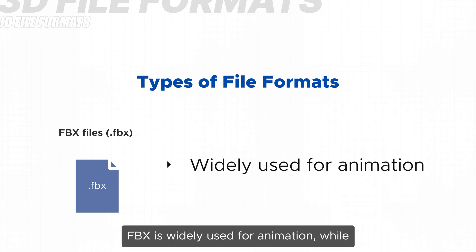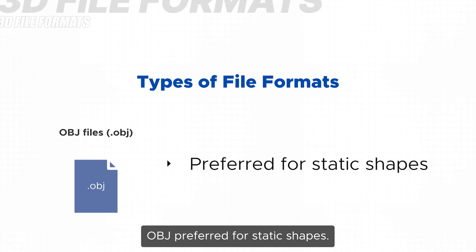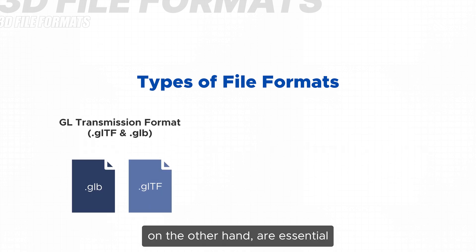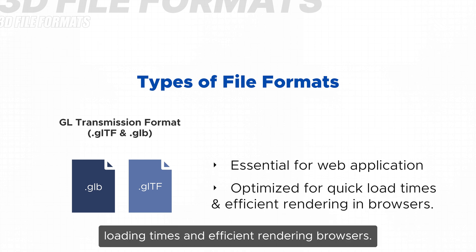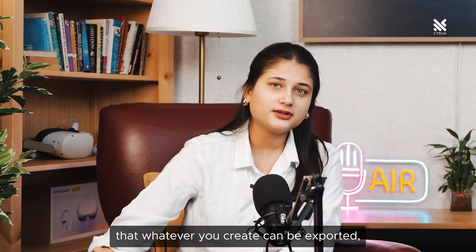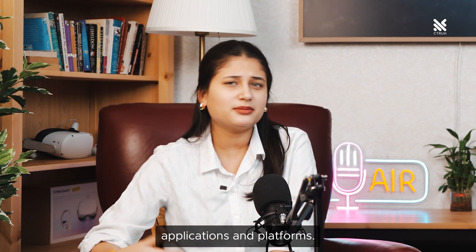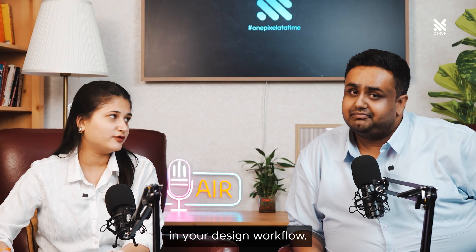FBX is widely used for animation, while OBJ is preferred for static shapes. GLB and GLTF, on the other hand, are essential for web applications as they're optimised for quick loading times and efficient rendering in browsers. These formats ensure that whatever you create can be exported, shared, and used across different applications and platforms, maintaining flexibility in your design workflow.